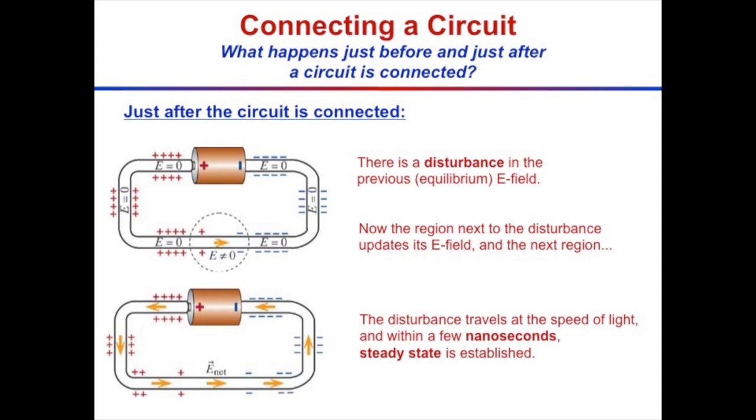Here's what we've just figured out about the transient response as we make the connection. Right at the connection point, there's an electric field, and that electric field change now gets distributed around the entire circuit at roughly the speed of light. So within a few nanoseconds, steady state is established — really fast, as you said.